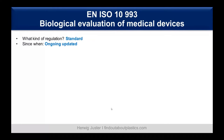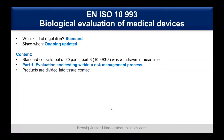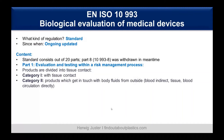The next standard is EN ISO 10993, the Biological Evaluation of Medical Devices — a well-known and well-established standard updated on an ongoing basis, consisting of 20 parts, though part 8 has already been withdrawn. The most relevant parts for plastics include Part 1: Evaluation and Testing within a Risk Management Process. Here, products are divided by tissue contact category: category one is direct tissue contact, category two involves body fluids or blood indirectly, and category three covers implants in tissue, bones, or blood contact.